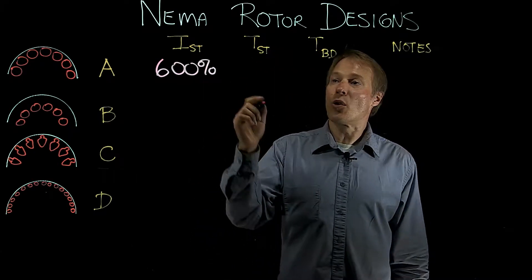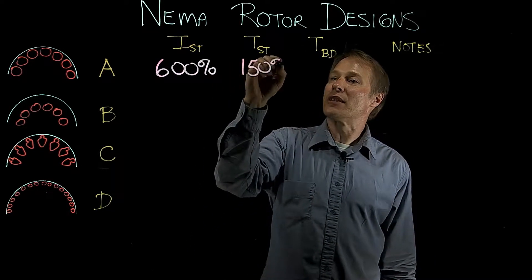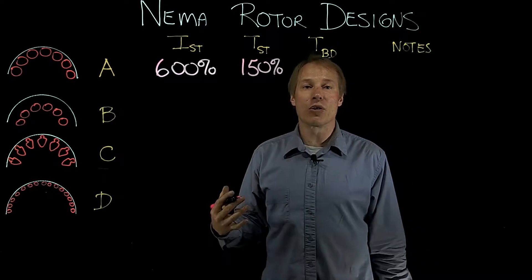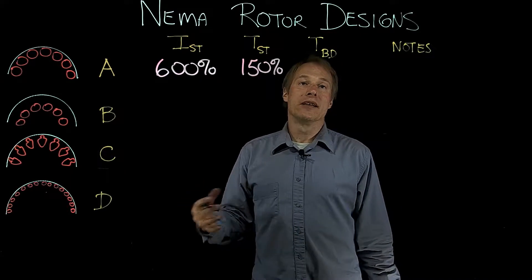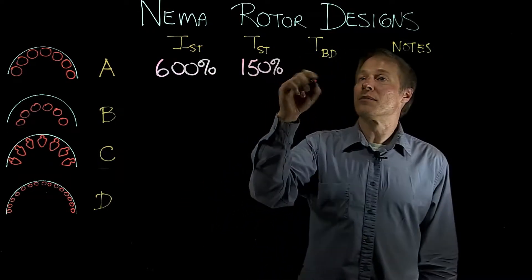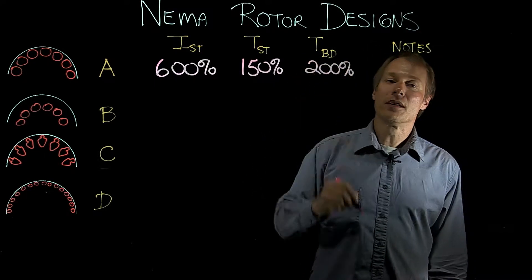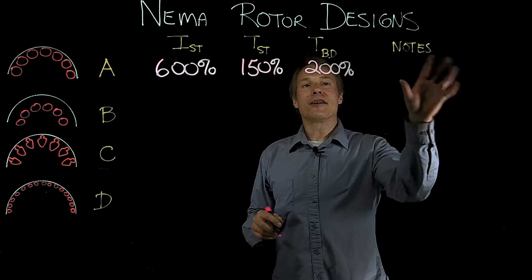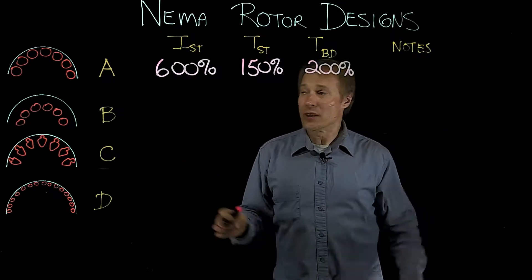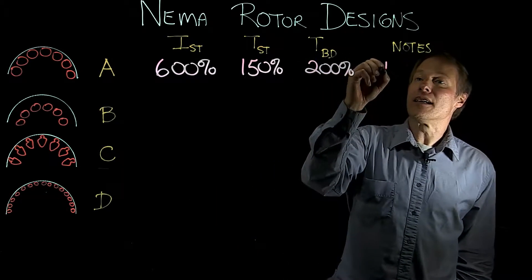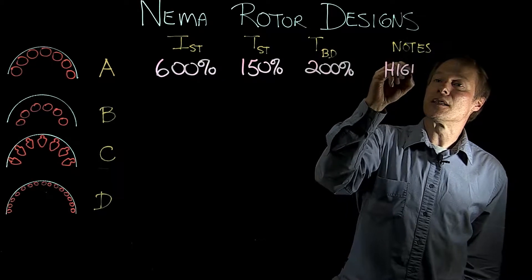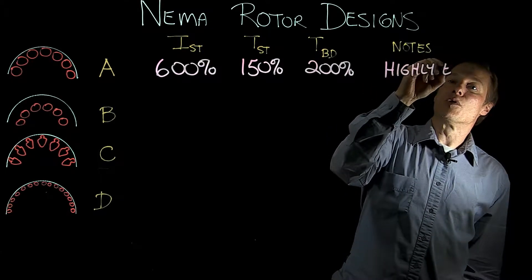Now the starting torque is going to be about 150% of the full load torque, whatever that may be. Now the breakdown torque, that's our peak torque, that's going to be about 200% for this motor. And the characteristic of the NEMA A design is it's highly efficient. So it's the most efficient rotor design.